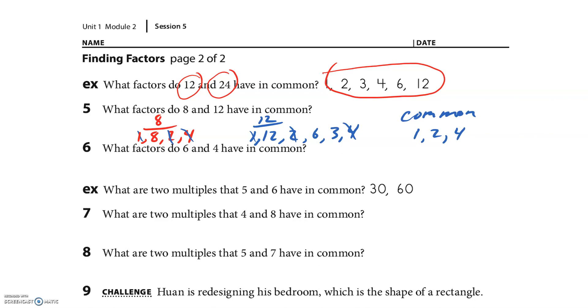What factors do 6 and 4 have in common? I'm thankful they're keeping these small. For 6: 1, 6, 2, and 3. For 4: 1, 2, and 4. So in common - oh, that was really bad handwriting, I apologize - 1 and 2. That's it. So then they give an example on the next one about multiples that 5 and 6 have in common. Let's try the next one.